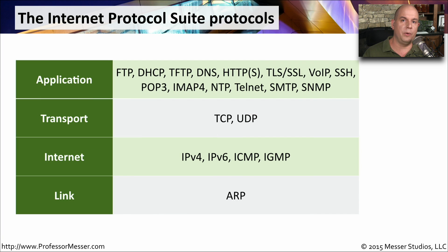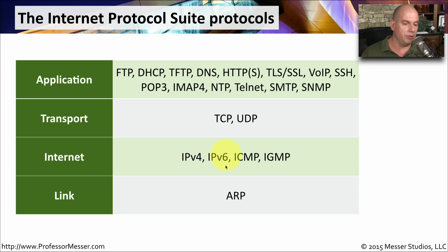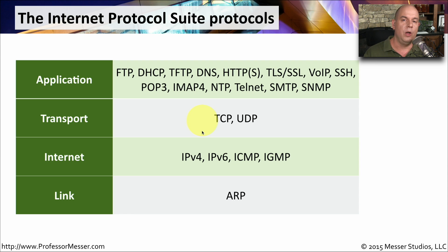If we took some of the well-known IP protocols and put them into the internet protocol suite, it would look something like this. Down at the link level, where we're talking about basic network communication, we would have the ARP protocol. At the internet level, where we are dealing with IP addresses, we would have IP version 4, IP version 6, ICMP, and IGMP. The transport layer is dealing with the TCP and UDP port numbers.